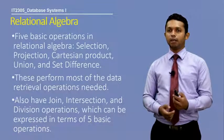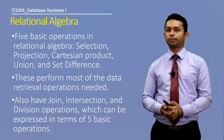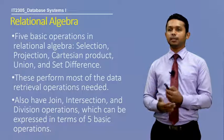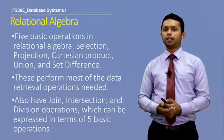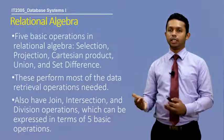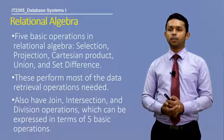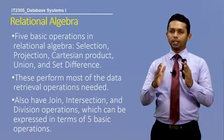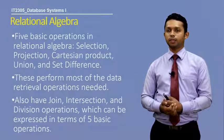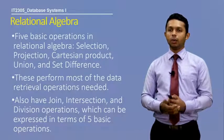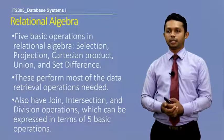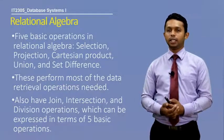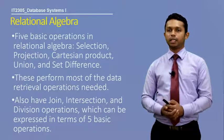Relational algebra has five basic operations: selection, projection, Cartesian product, union, and set difference. You may have heard of Cartesian product and union when learning about sets. These perform most of the data retrieval operations needed. Relational algebra also has join, intersection, and division operations, which can be expressed in terms of the five basic operations.